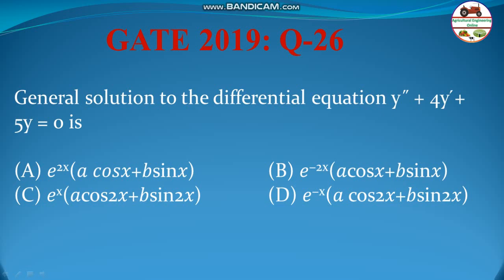Hello students, welcome to my channel. Let us solve a problem from GATE 2019, question number 26. It is a mathematics problem: find the general solution to the differential equation y double dash plus 4 y dash plus 5 y is equal to 0. Four options are given. Let us quickly go to the solution.